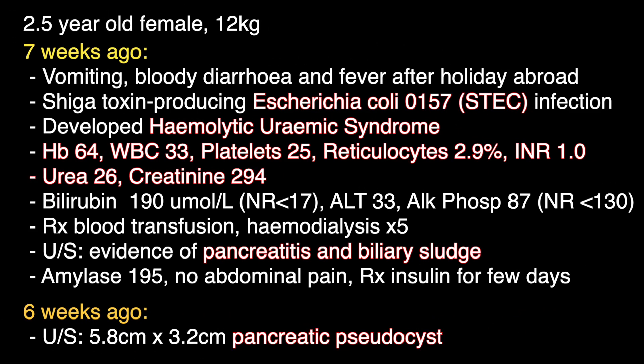The patient is a two and a half year old girl weighing 12 kilograms. She presented seven weeks ago with vomiting, bloody diarrhoea and fever after a family holiday abroad. Shiga toxin-producing E. coli, serotype O157, also known as STEC, was isolated in the stool culture. She developed haemolytic uremic syndrome, which is a known complication of STEC infection.